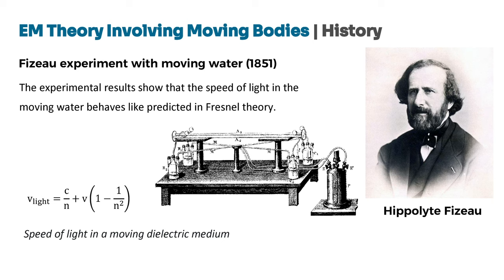In 1851, Hippolyte Faso conducted an experiment using moving water to test Fresnel's hypothesis. He measured the speed of light as it passed through water moving at high speed, and the results confirmed Fresnel's theory, providing strong experimental support for the Fresnel-drag effect. This historical background sets the stage for the later work of Voldemar Voigt and Hendrik Lorentz. The discoveries of stellar aberration by Bradley, Arago's experiments, Fresnel's drag hypothesis, and Faso's confirmation through experimentation provided critical insights, laying the foundation for the development of electromagnetic theory and the study of wave propagation in moving frames of reference.